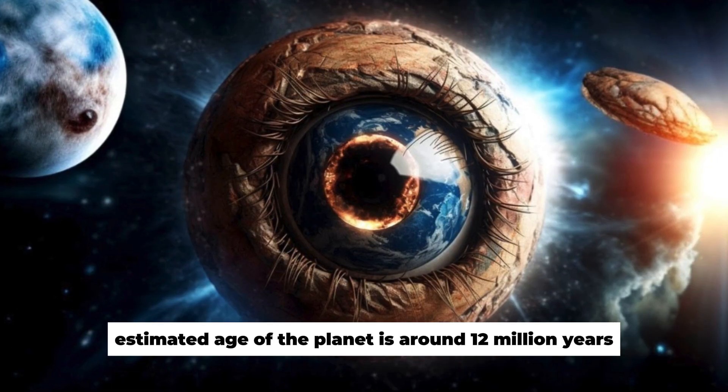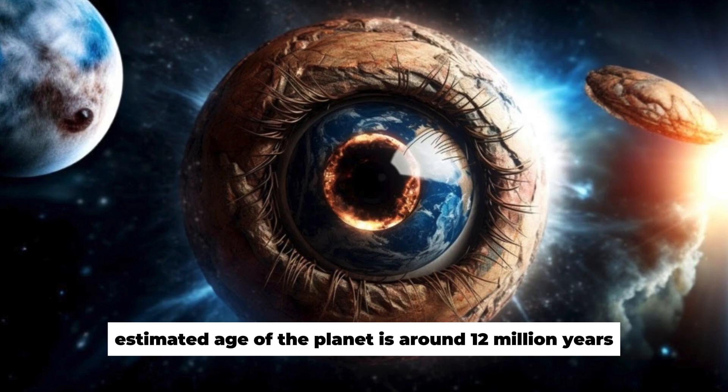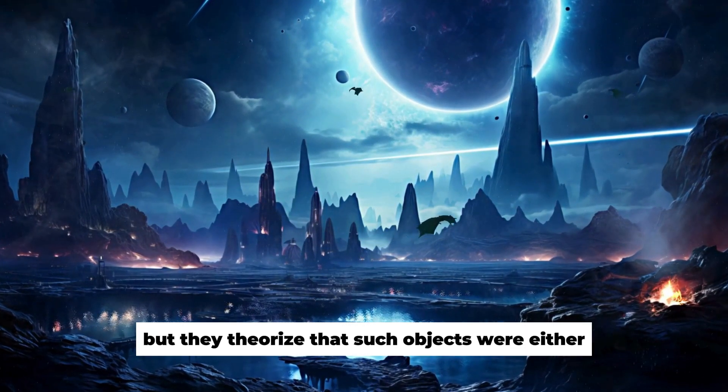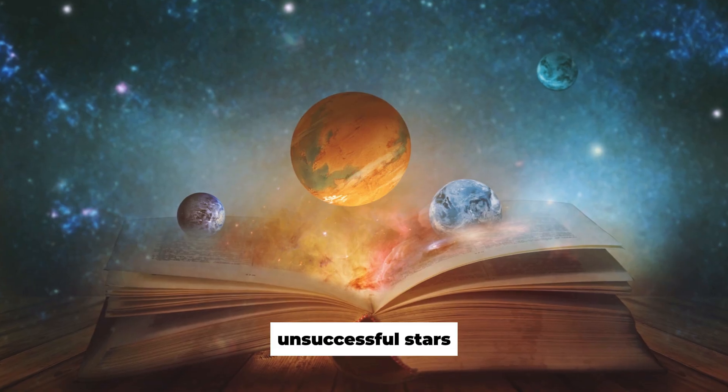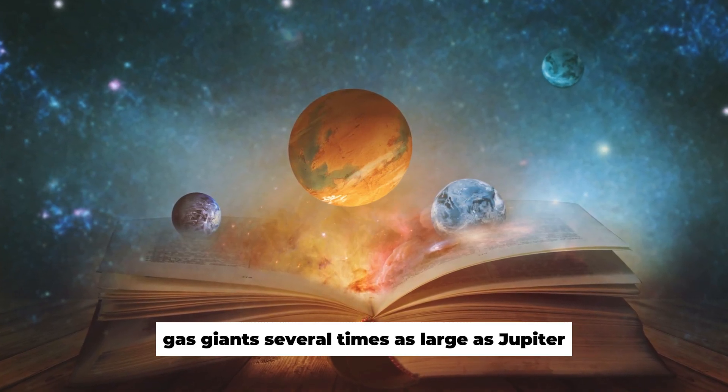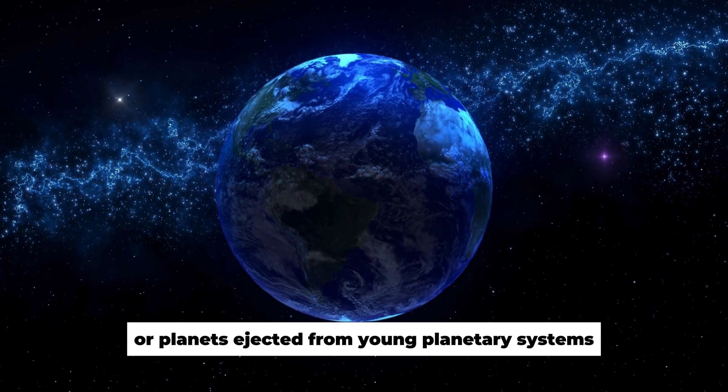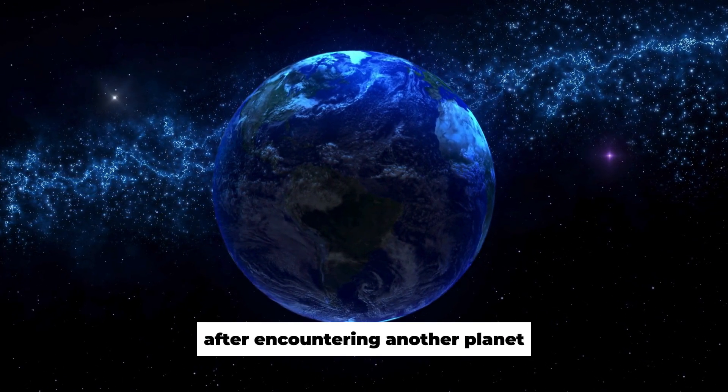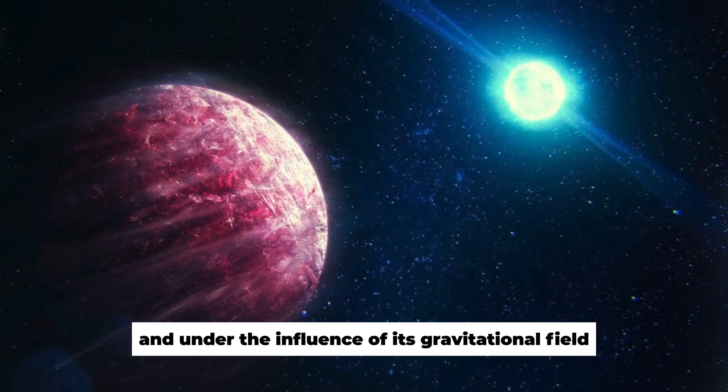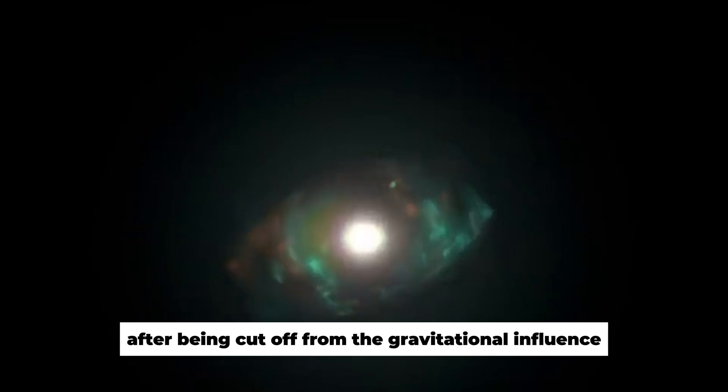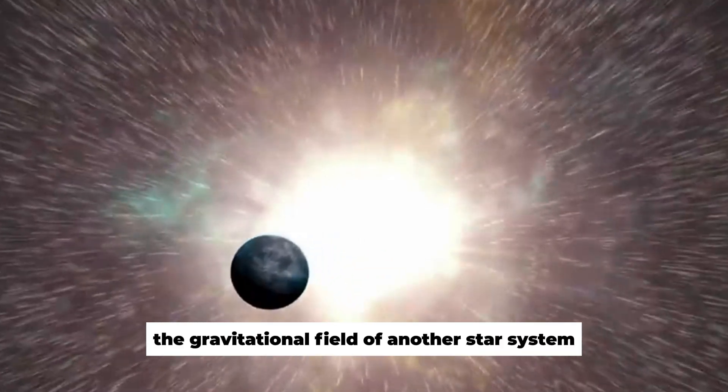The estimated age of the planet is around 12 million years old. Scientists don't know exactly how such planets are formed, but they theorized that such objects were either unsuccessful stars, gas giants several times as large as Jupiter, or planets ejected from young planetary systems after encountering another planet, and under the influence of its gravitational field. After being cut off from the gravitational influence, they don't return to their original system, doomed to drift through space until they're pulled into the gravitational field of another star system.